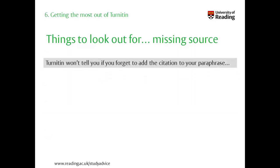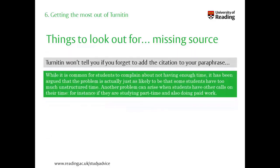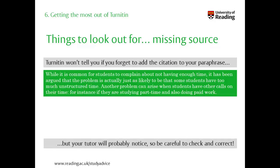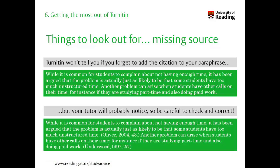Another thing that can be a problem is when you've described something in your own words but forgotten to say where the idea came from. You must acknowledge the source of any idea you got from your reading with a citation, even if you do write it in your own words. This is the kind of error that Turnitin will not pick up but your tutor probably will, so you must be careful to check for yourself.